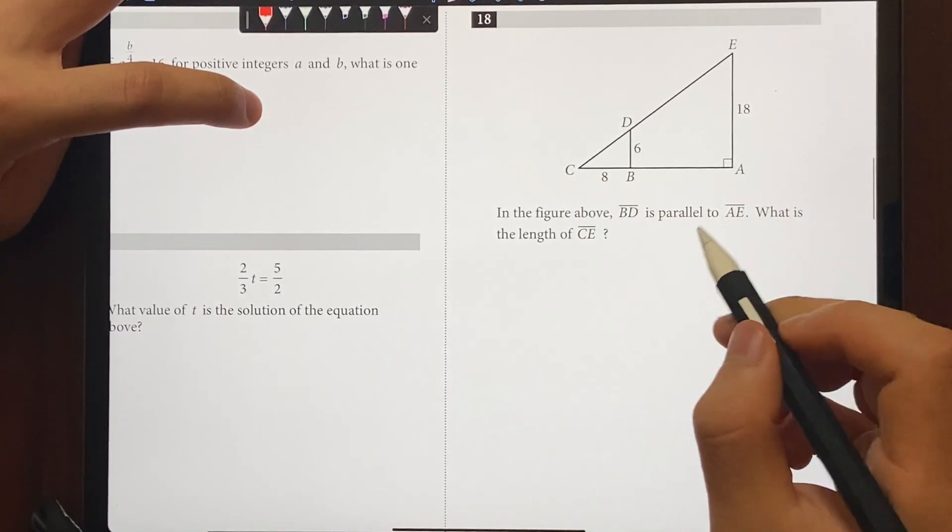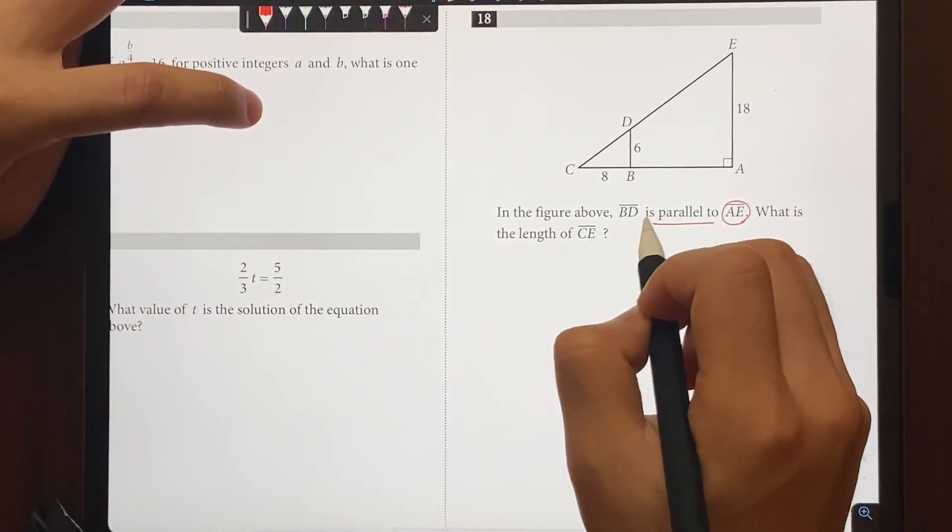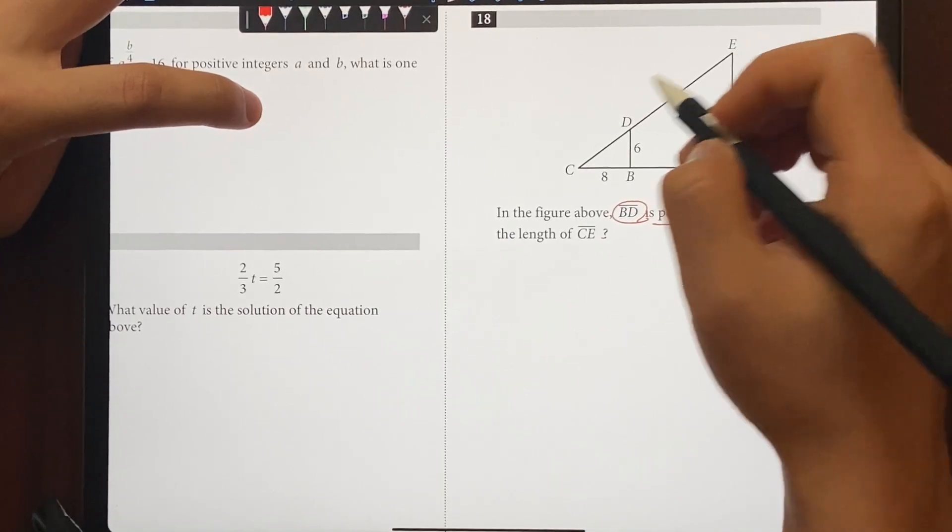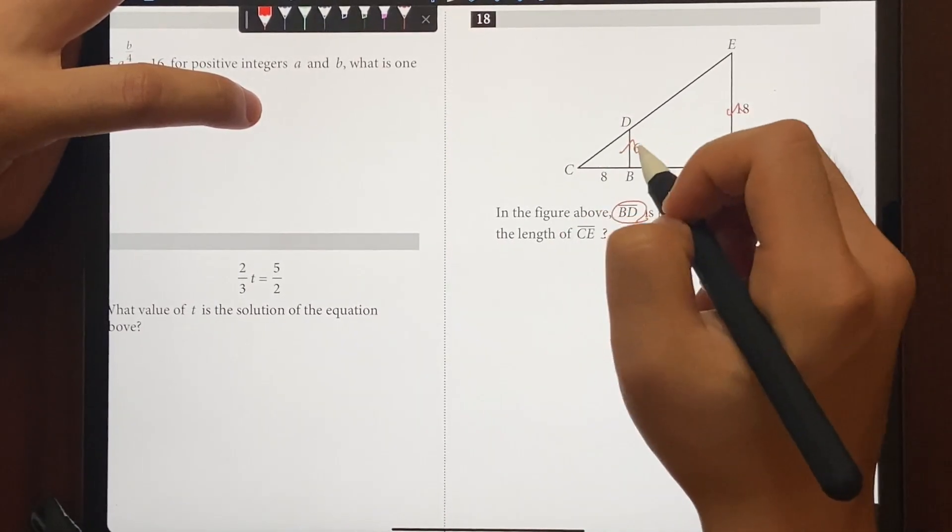So the question says, in the figure above, BD is parallel to AE. So these two things are parallel. What's the length of CE? So CE is right here, BD and AE, they're parallel. These are parallel, which means angles are going to be the same here and here, and they share the last third angle.